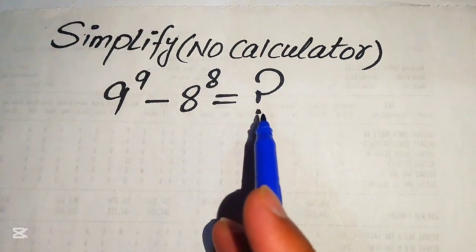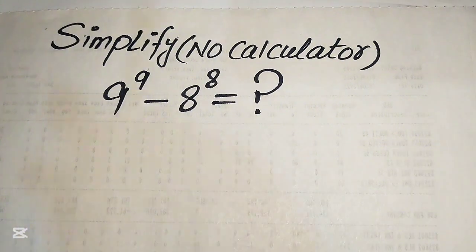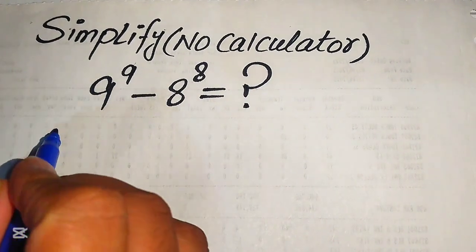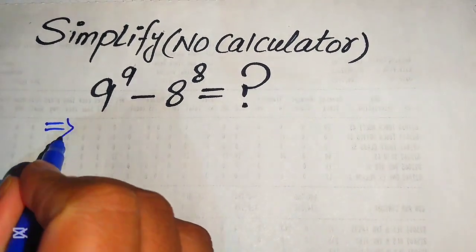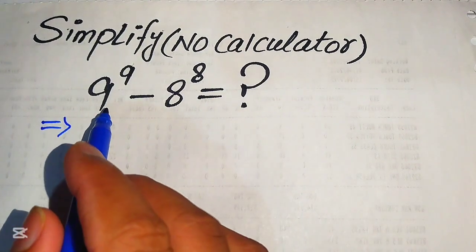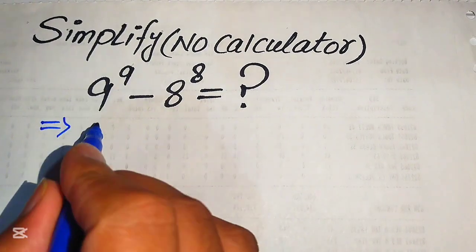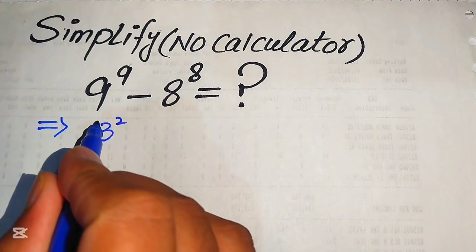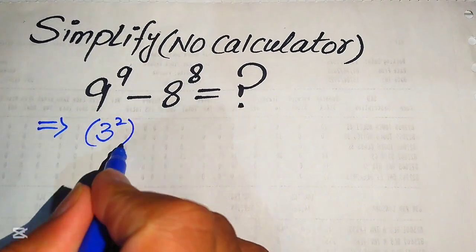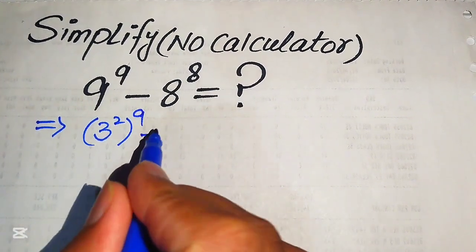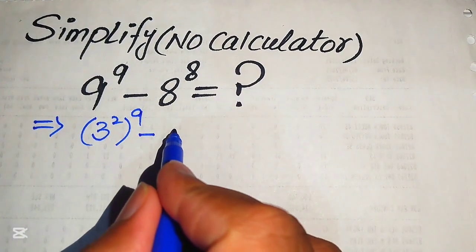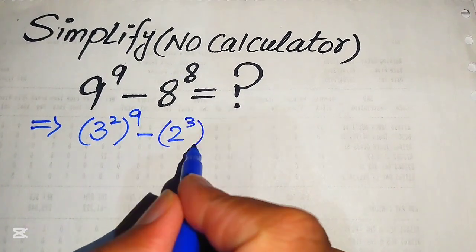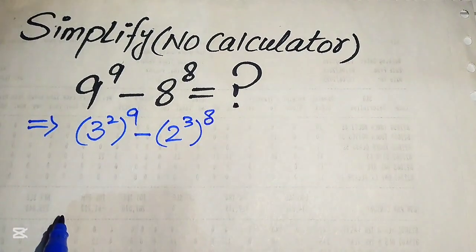The very first thing we are going to do is focus on the bases of these two terms. The base of the first term is 9, and we write this 9 in prime factors form: its prime factors give 3 squared, and its whole power is 9. We write 8 in prime factors form: its prime factors are 2 cubed, and its whole power is 8.